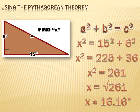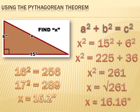The square root of 261 is about 16.16 inches, so the Pythagorean theorem allowed us to determine the length of the hypotenuse. You could estimate that x equals about 16.2 inches.